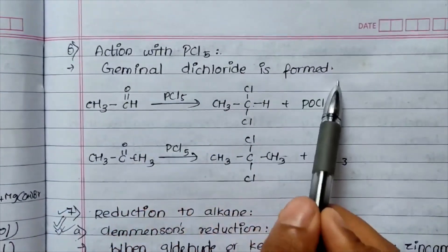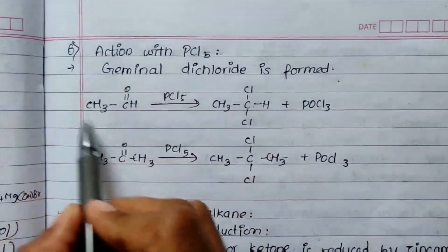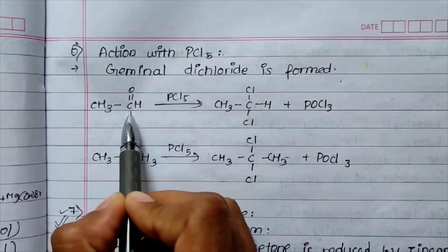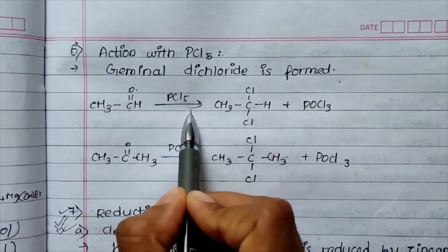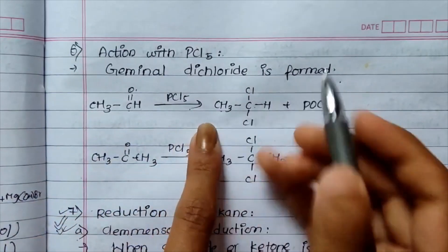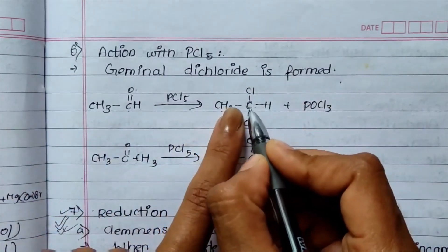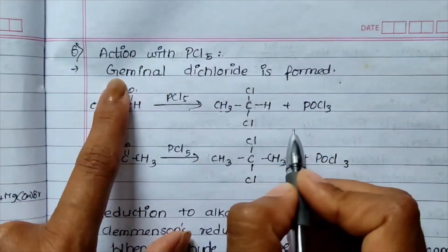This is CH3CHO. In presence of PCl5, this is CH3CHO. This is CH3CHO.